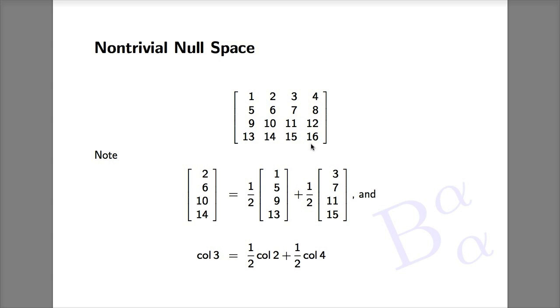What does this imply? This implies that this matrix has a non-trivial null space. Because if we take the columns in combination one-half, minus one, one-half, zero, the result will be the zero vector. Therefore, the vector one-half, minus one, one-half, zero is in the null space.